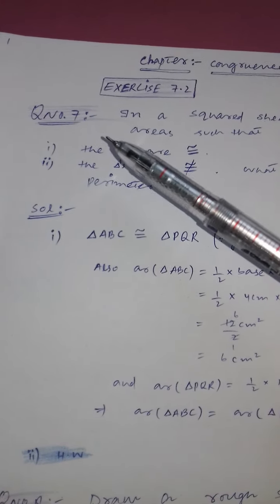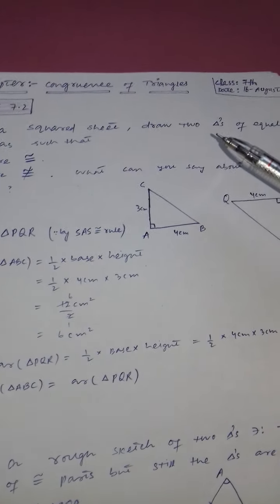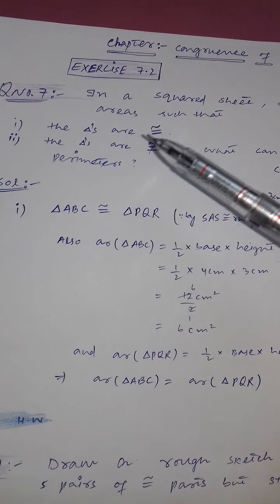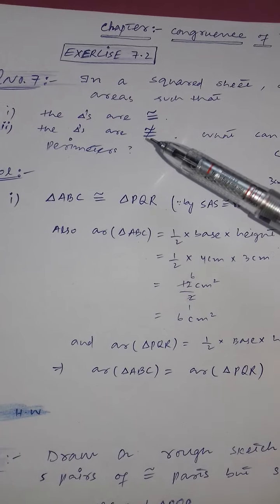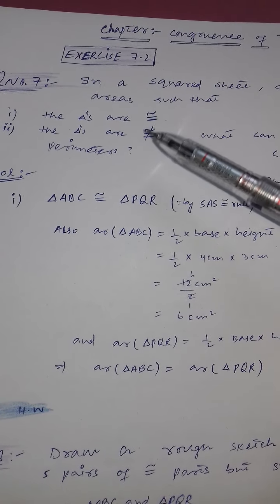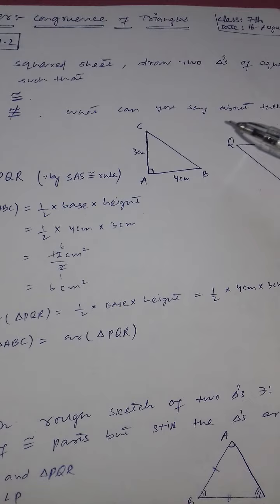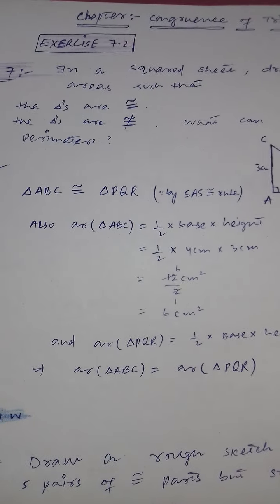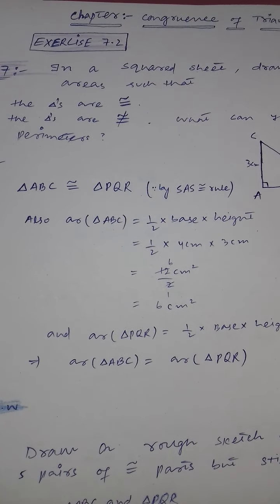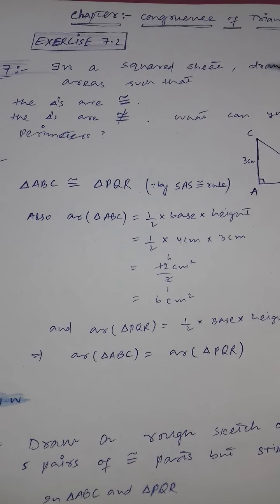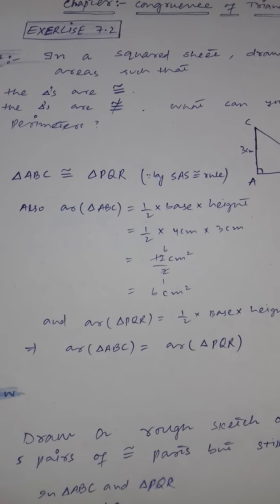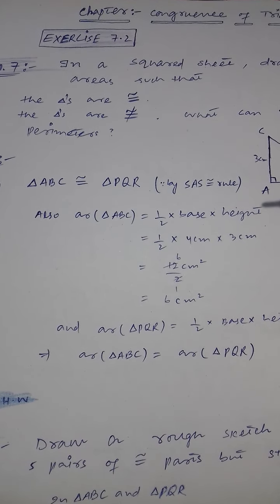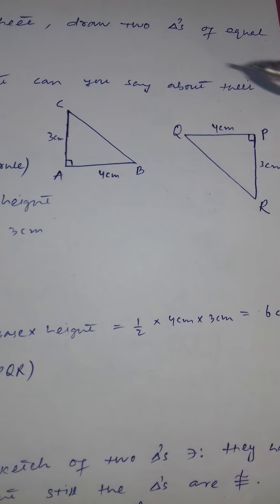Question number seven says: on a squared sheet, draw two triangles of equal areas such that — part one, the triangles are congruent; part two, the triangles are not congruent. And what can you say about their perimeters? A squared sheet is the type of sheet that contains small square boxes of equal size.